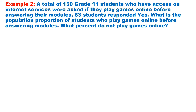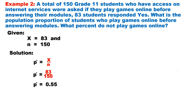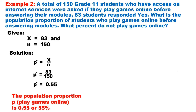Example 2: a total of 150 grade 11 students who have access to internet services were asked if they play games online before answering their modules. 83 students responded yes. What is the population proportion of students who play games online before answering modules? Our givens are X equals 83 and N equals 150. Substituting them on the formula, we have P-hat equals 83 over 150. Simplifying by division, P-hat equals 0.55.